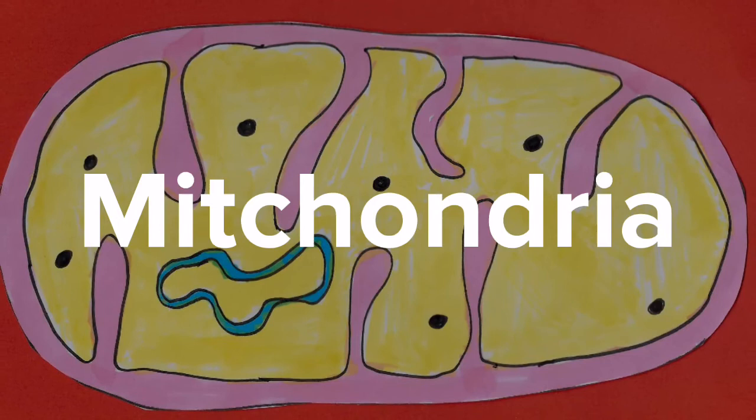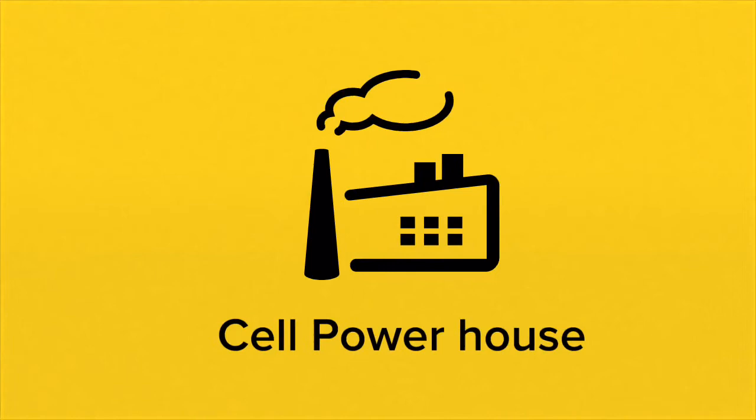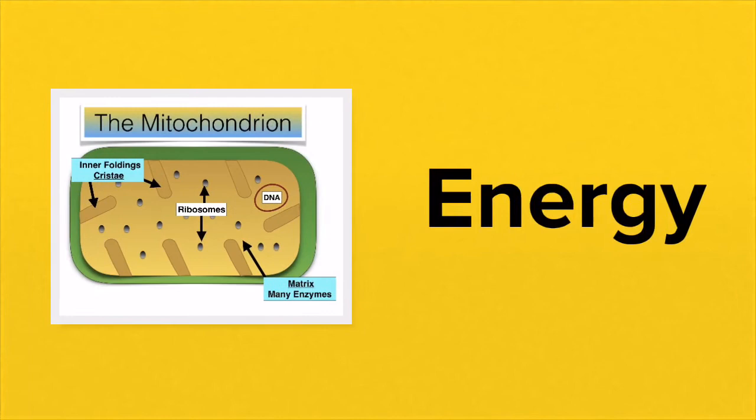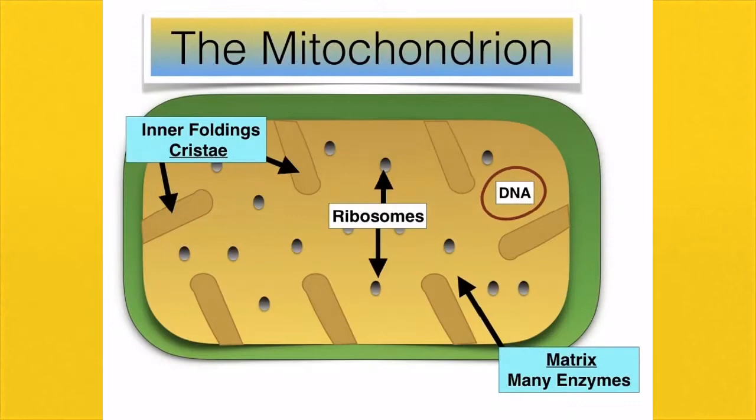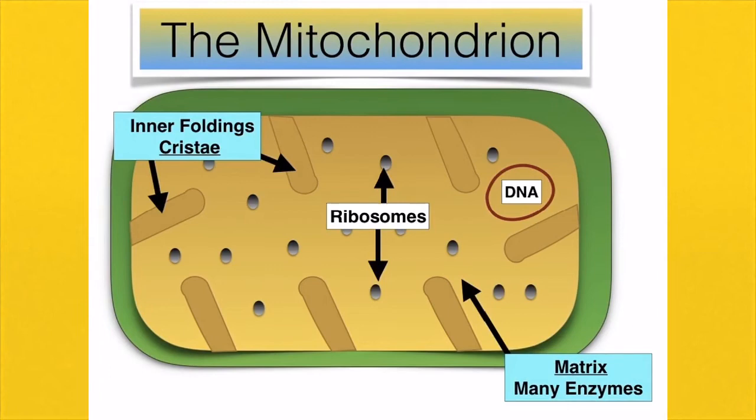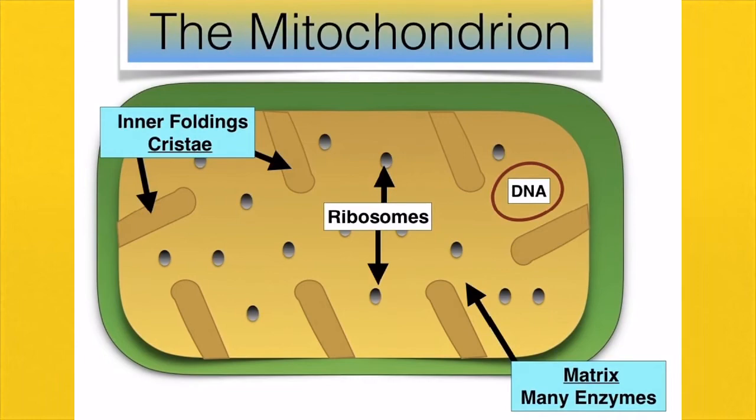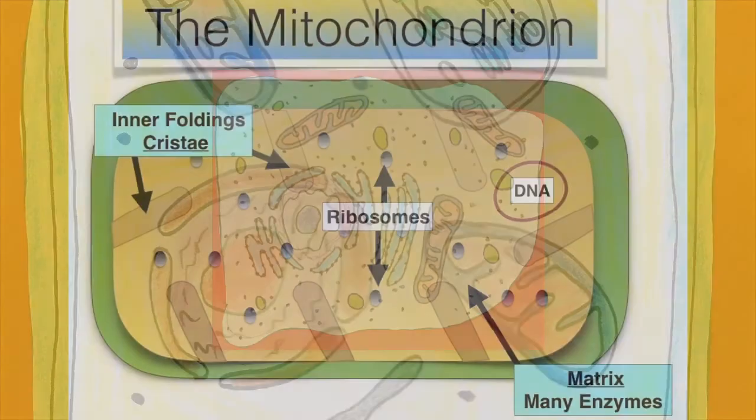Mitochondria are the next organelles — mitochondrion is one, mitochondria are many — and these are responsible for the production of energy, acting as power stations for all your cells. Cells that require a lot of energy, such as muscle cells, will have high numbers of mitochondria with many infoldings. You can see those inner membranes forming foldings known as cristae, the matrix which contains many enzymes, a circular loop of DNA, and ribosomes.